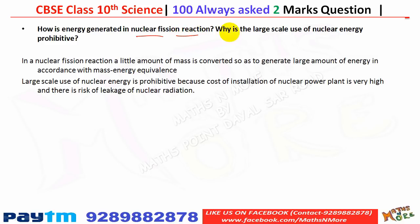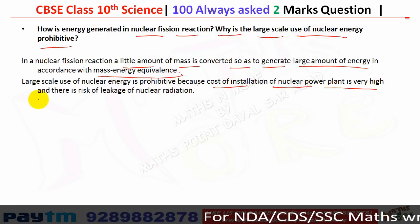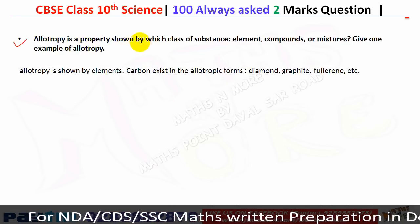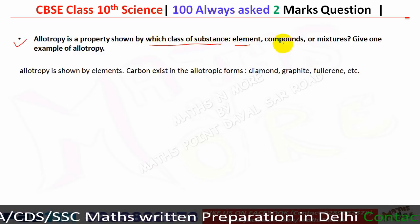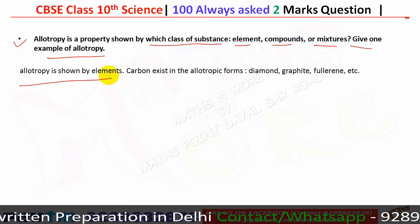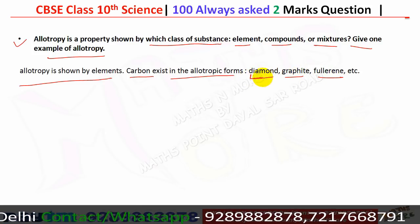In a nuclear fission reaction, a small amount of mass is converted to generate a large amount of energy in accordance with mass-energy equivalence. Large-scale use of nuclear energy is prohibited because the cost of installation of nuclear power plants is very high and there is a risk of leakage of nuclear radiation. Allotropy is a property shown by elements; carbon exists in allotropic forms — diamond, graphite, and fullerene.